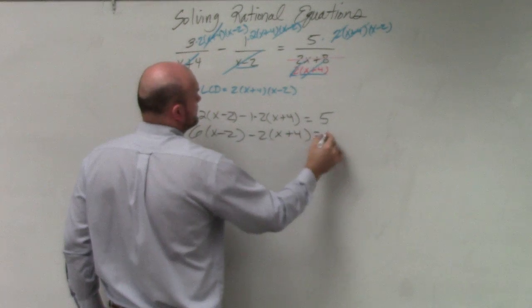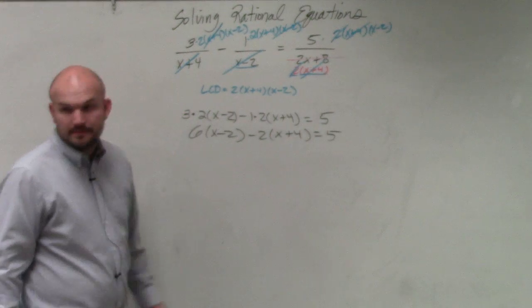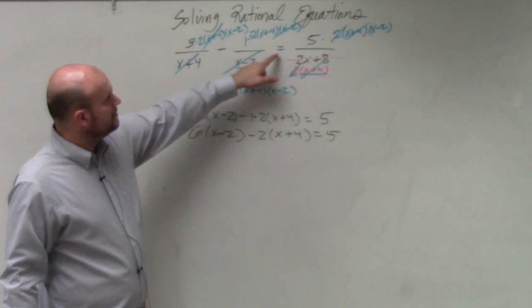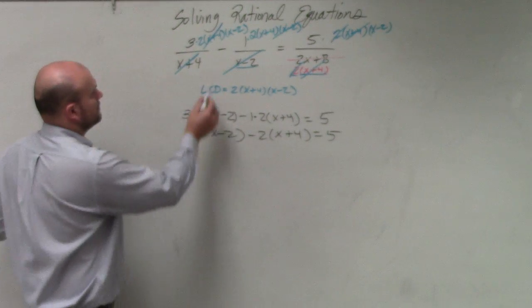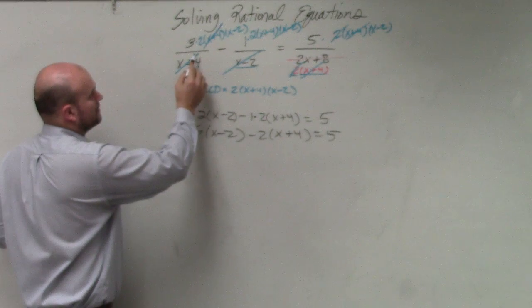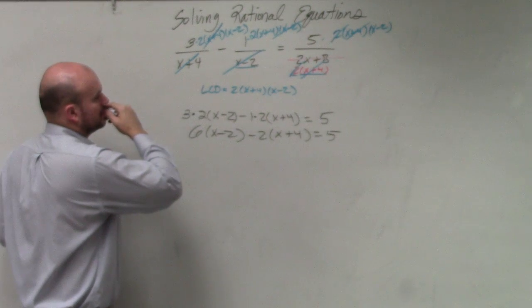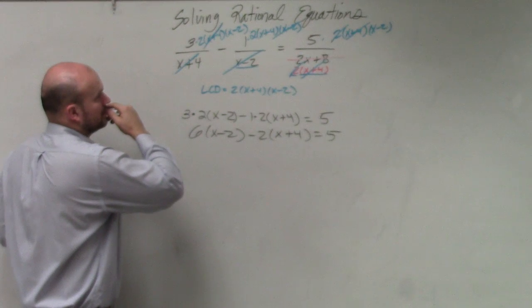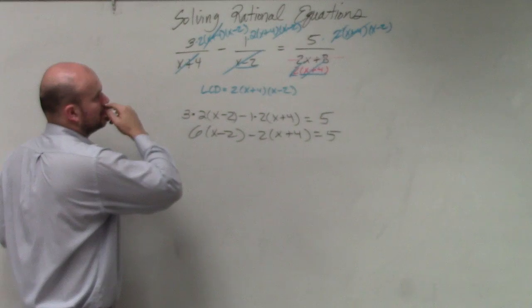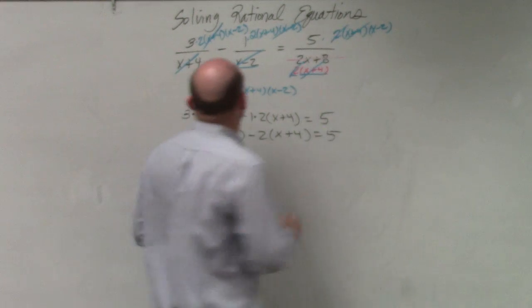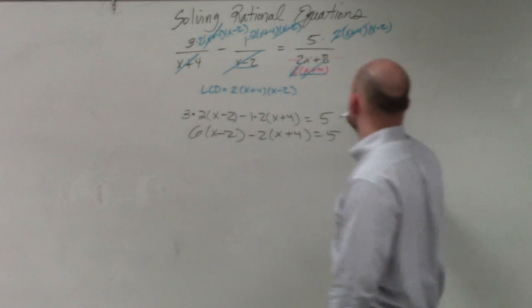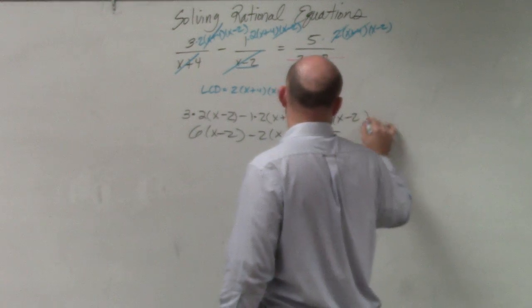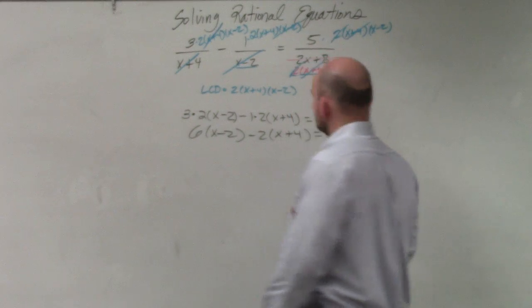Shouldn't that be 5 times what? 5 times what? X minus 2. X minus 2, where? Here? Top right. Top right. This one? No. Yes. Oh, 5 times x minus 2. Yes, thank you. I did miss that. Good catch.